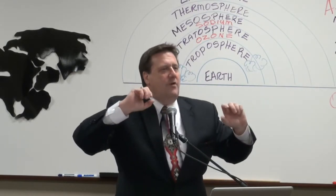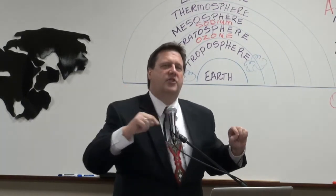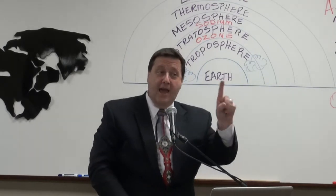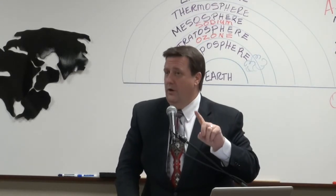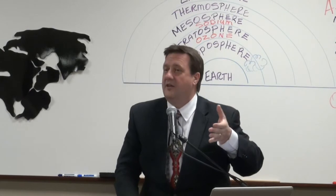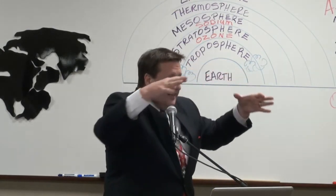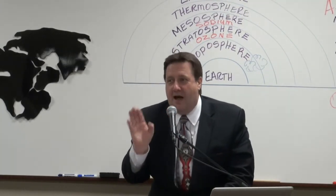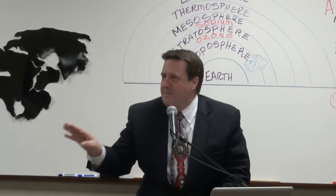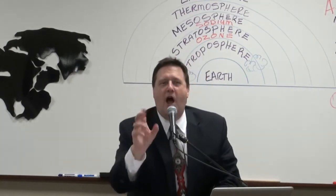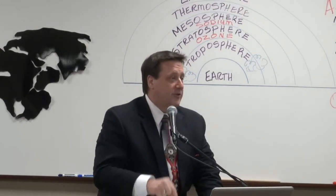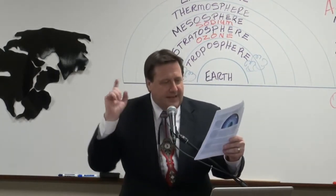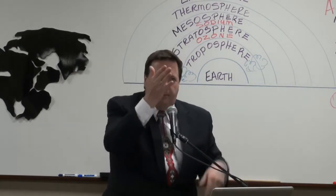At the equator, the earth is spinning at 1,034 miles per hour, but in Anchorage, Alaska, it's only spinning at 503 miles per hour, because the latitude circle is smaller there. Do not worry about the world coming to an end — it's not coming to an end, because scripture says 'world without end.' He's reforming the earth, and those tectonic plates are where we know them to be.